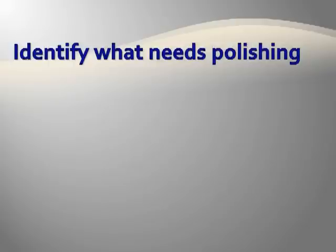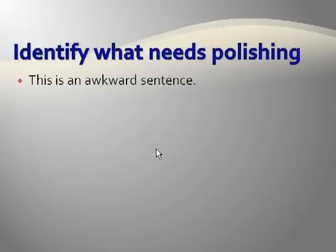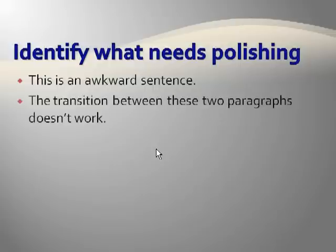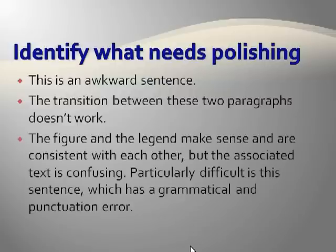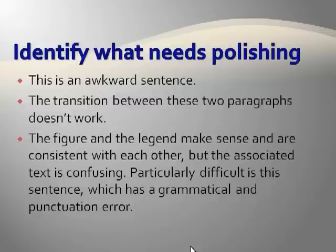You will want to identify what needs polishing. Sometimes, despite an author's best effort, material is not presented in the best way. Detailed comments go a long way in helping the author. These example comments are specific enough if they are inserted near the text in question. 'This is an awkward sentence.' Notice you don't have to suggest how to fix it, just that it needs to be fixed. 'The transition between these two paragraphs doesn't work.' Point out what needs polishing and why. Another example: 'The figure and the legend make sense and are consistent with each other, but the associated text is confusing. Particularly difficult is this sentence, which has a grammatical and punctuation error.' This example is from another peer review manuscript that I was an author on — we goofed big time. The sentence was awkward and contained two fatal errors. Notice the reviewer is honest, but not condescending.